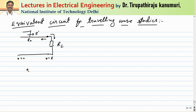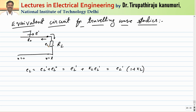The voltage at the load EL is equal to EL' plus EL'', where EL' is the incident wave and EL'' is KL times EL', so EL equals EL' into (1 + KL). The reflection coefficient KL is equal to (RL minus R0) divided by (RL plus R0).